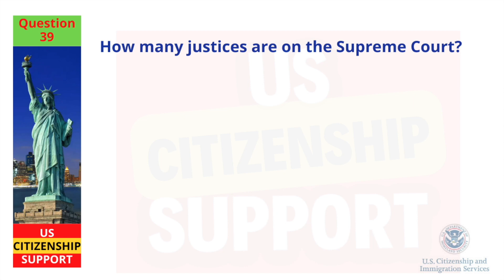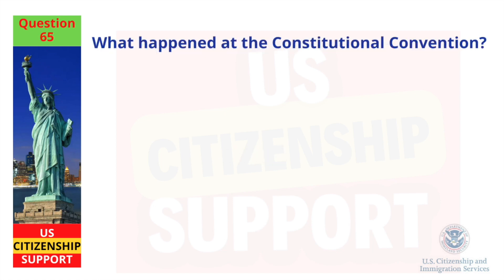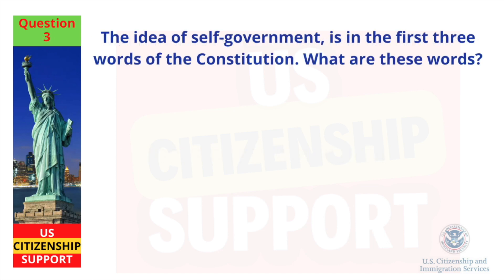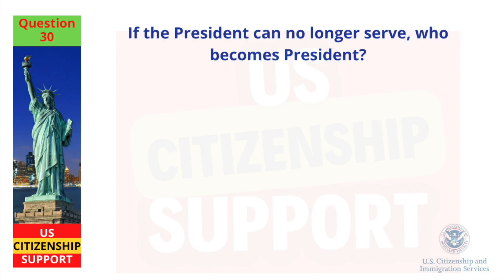How many Justices are on the Supreme Court? 9. What happened at the Constitutional Convention? The Constitution was written. The idea of self-government is in the first three words of the Constitution. What are these words? We the people. If the President can no longer serve, who becomes President? The Vice President.